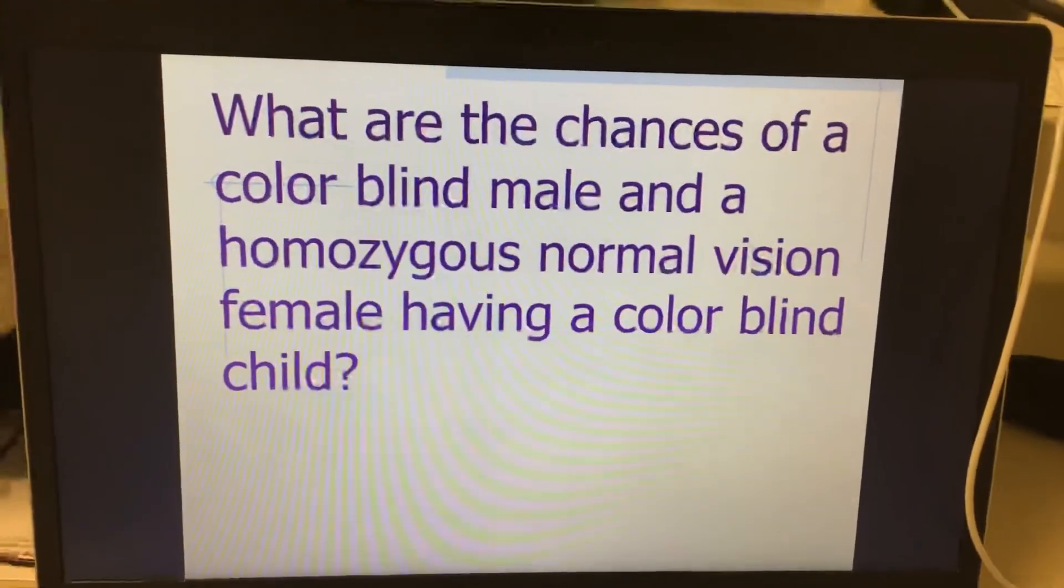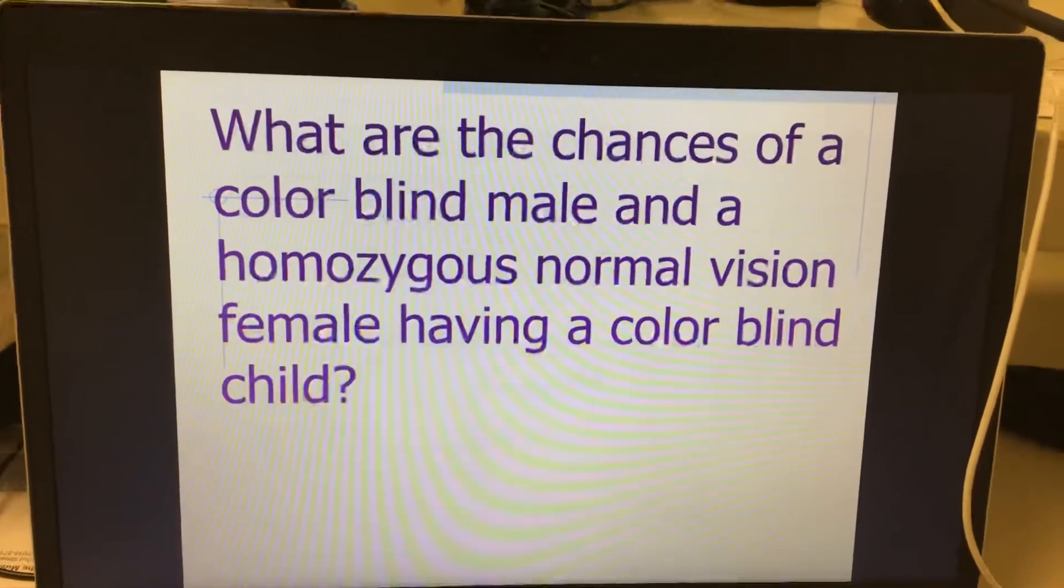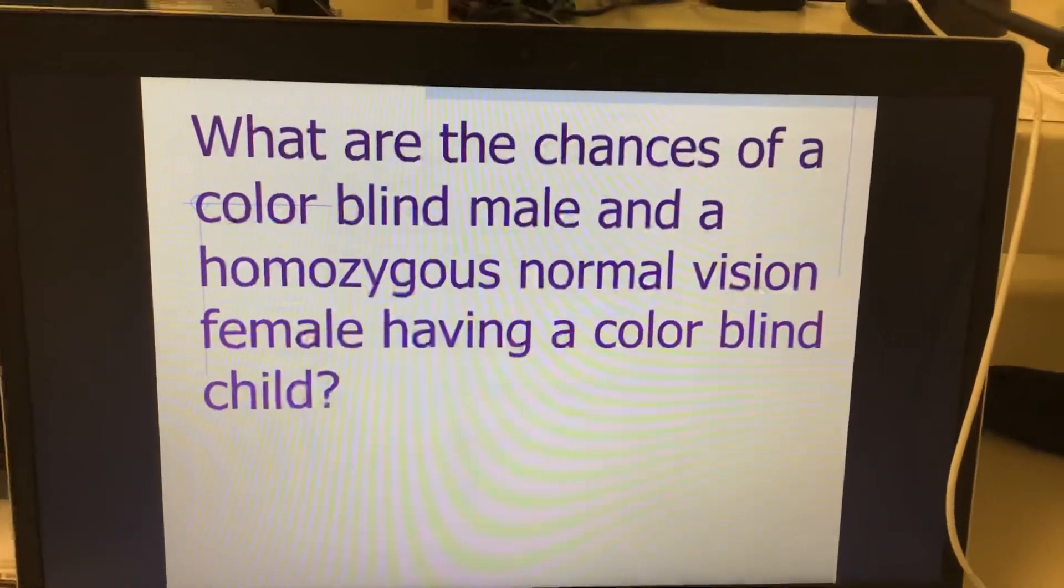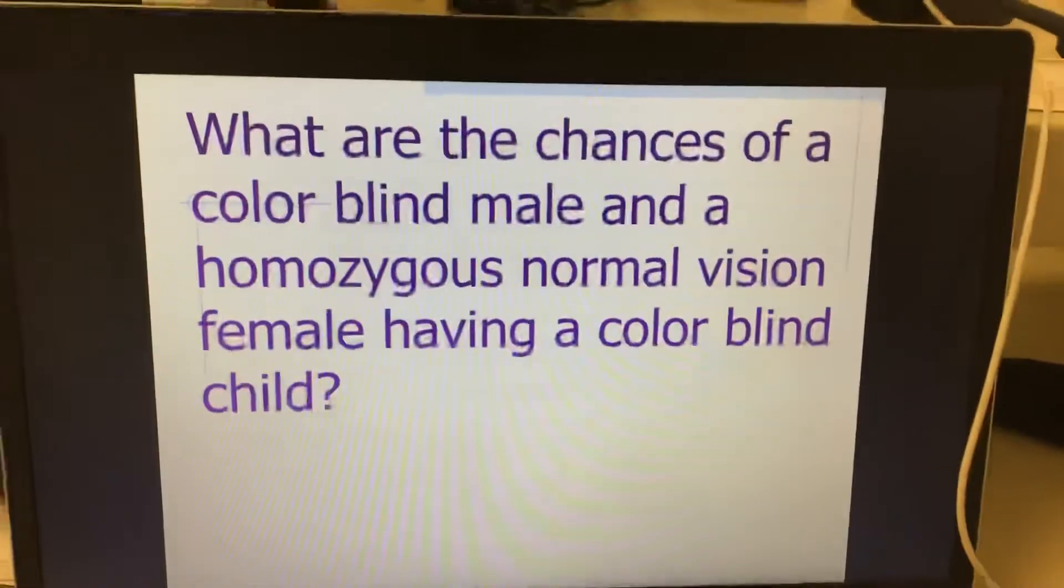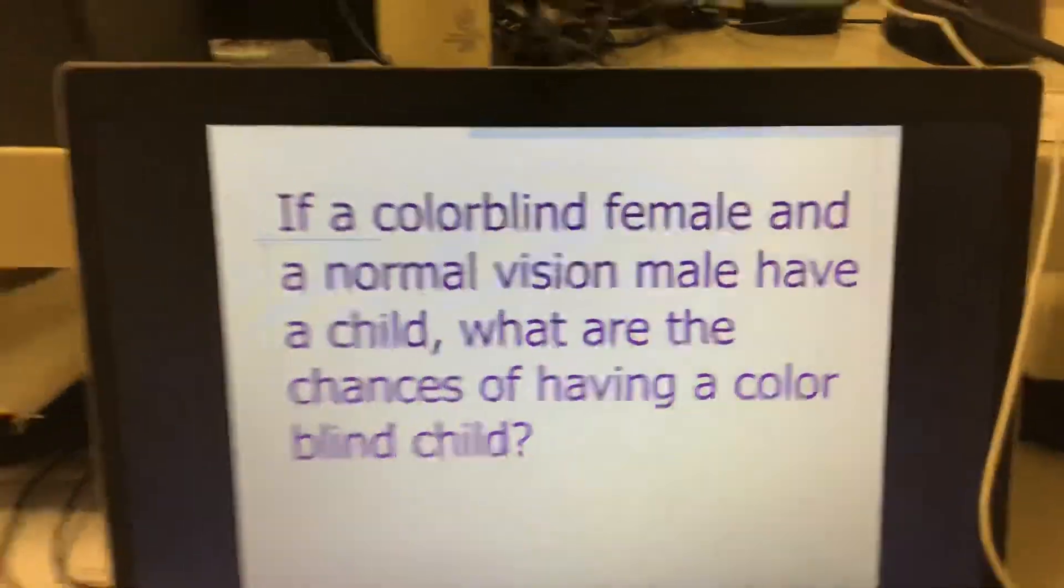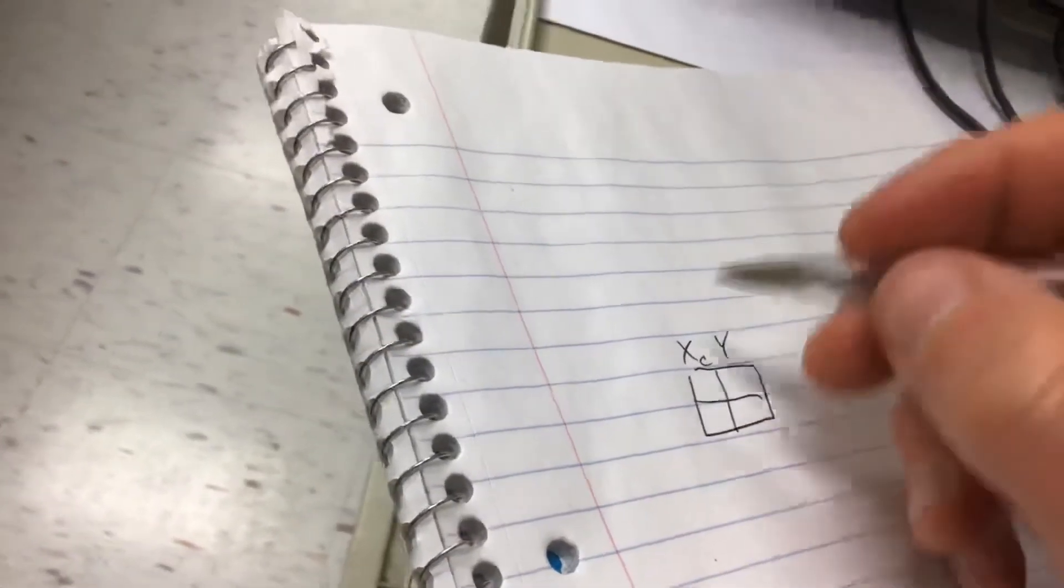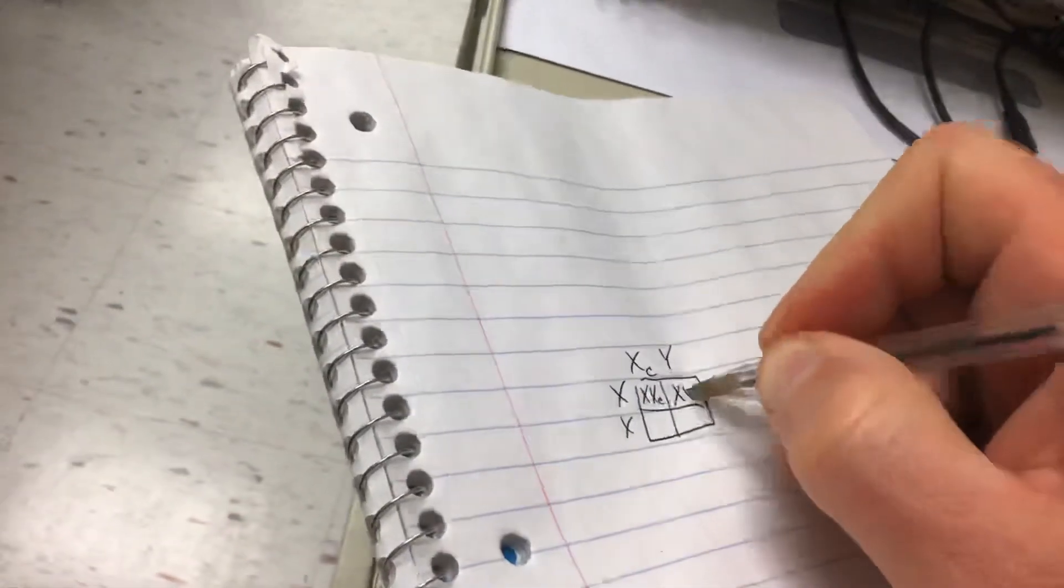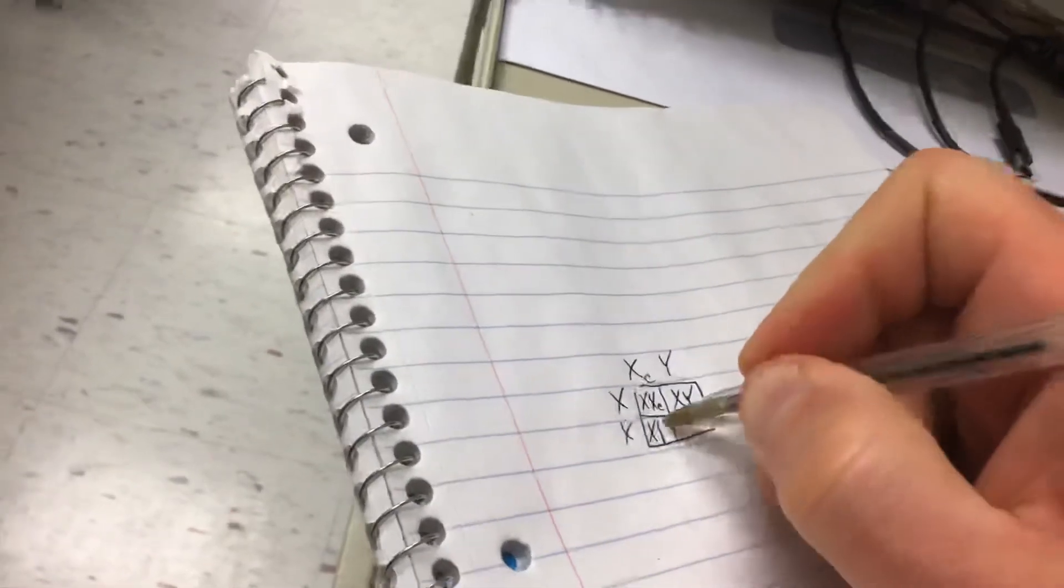Let's do a little example here. What are the chances of a colorblind male and a homozygous normal vision female having a colorblind child? A colorblind male and a homozygous normal. If we do this here, a colorblind male, let's do a little Punnett square, colorblind male would be XY, and then we have that little C there, and a normal vision female. So that's just XX. When we cross this, we always put the C on the second X. I'm not sure why, but it's just the way it goes. Always put the C on the second X.